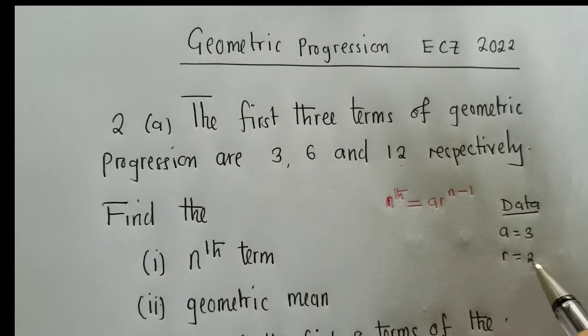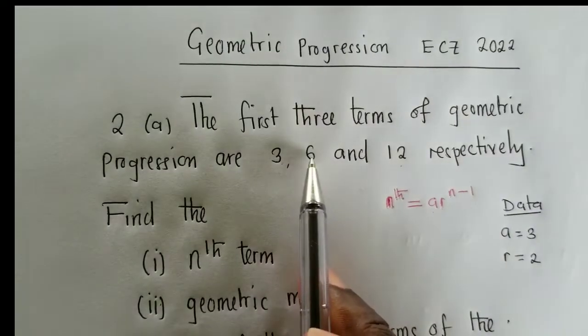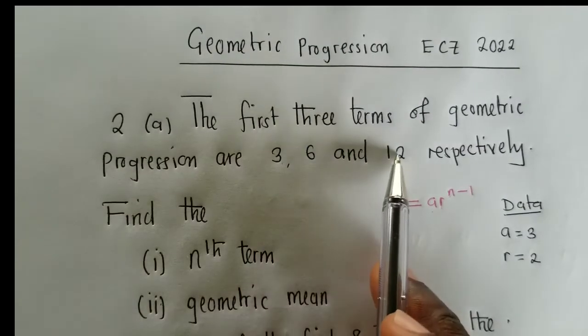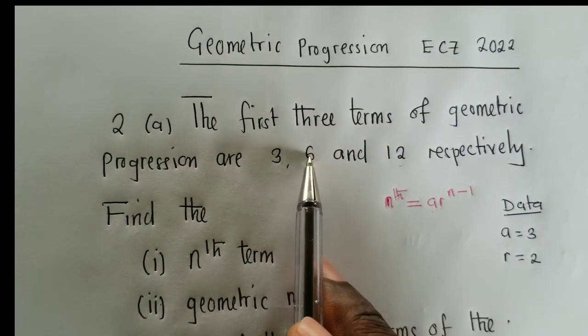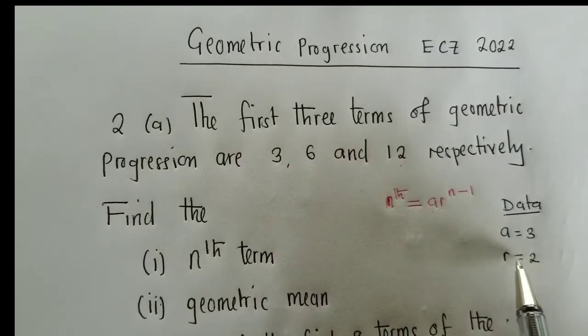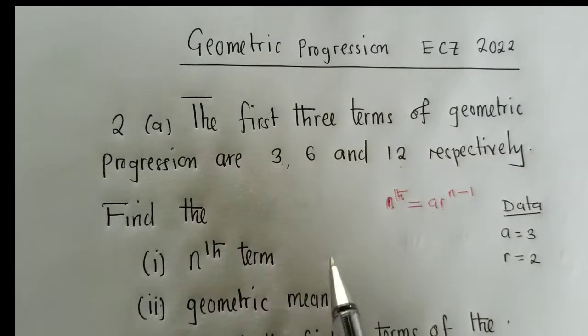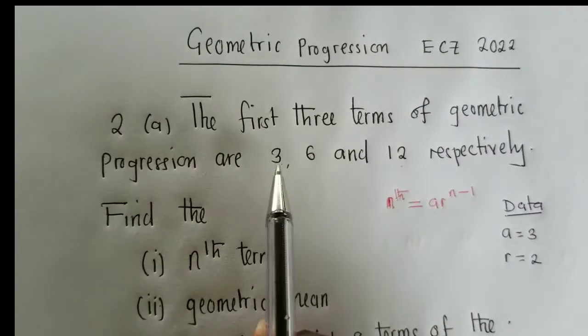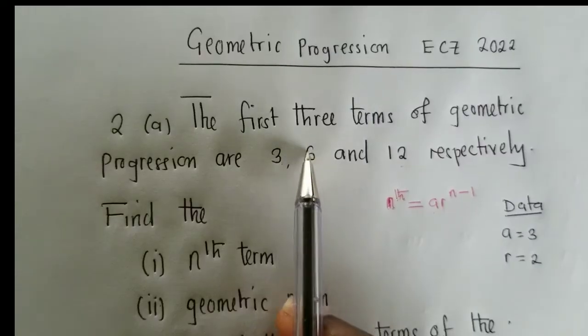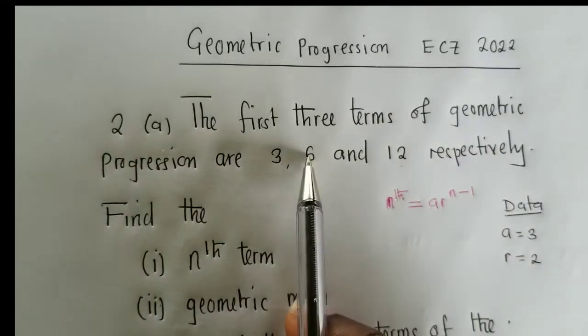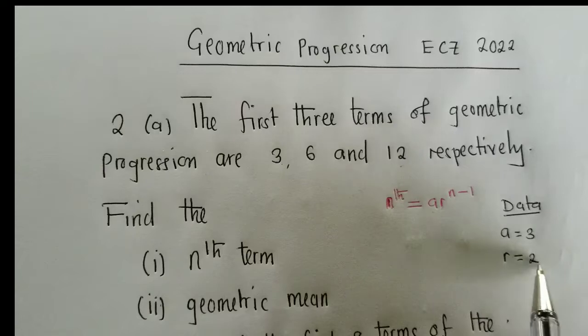My r will be a 2. So to find r, you just say 6 divided by 3, or 12 divided by 6. It will give us a 2. This is a number, or a constant, that is being multiplied to find the next term. If you want to find how this 6 came about, it was 3 multiplied by 2, gave us 6. 6 multiplied by 2 gave us 12, and so on and so forth.